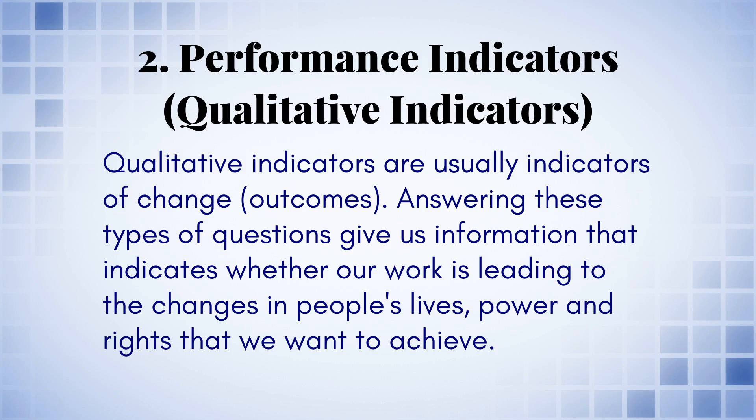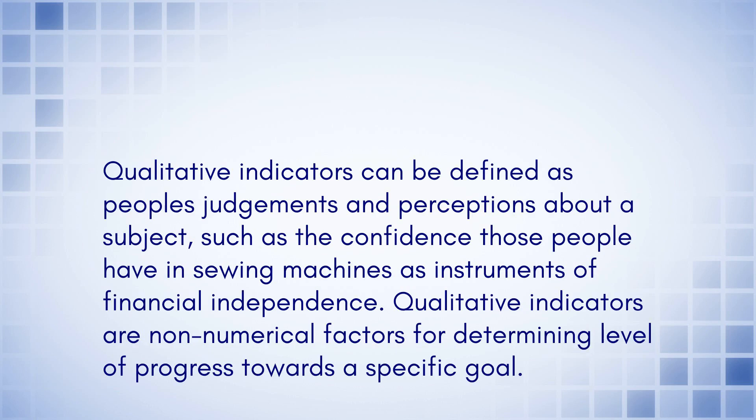2. Performance indicators — qualitative indicators. Qualitative indicators are usually indicators of change, outcomes. Answering these types of questions gives us information that indicates whether our work is leading to the changes in people's lives, power and rights that we want to achieve. Qualitative indicators can be defined as people's judgments and perceptions about a subject, such as the confidence those people have in sewing machines as instruments of financial independence. Qualitative indicators are non-numerical factors for determining the level of progress towards a specific goal.